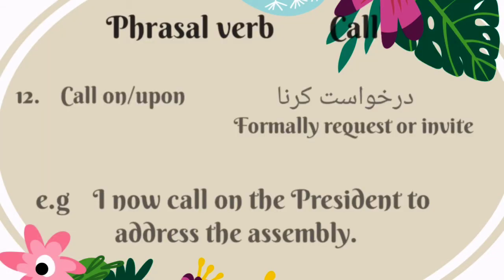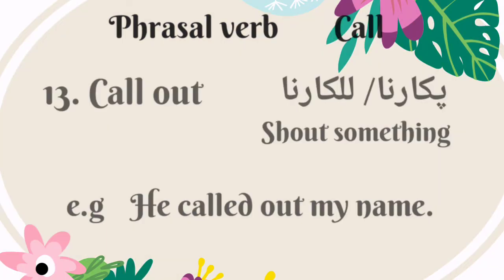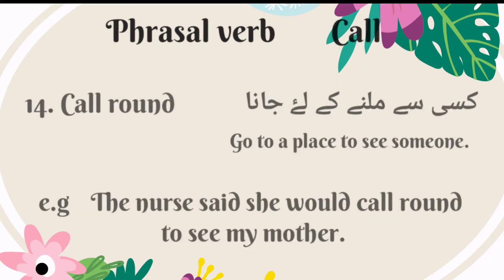The twelfth phrasal verb is 'call on' or 'call upon.' It means formally request or invite — Urdu mein is ka matlab hai tarkhast karna. For example: I now call on the president to address the assembly. The thirteenth phrasal verb is 'call out.' It means shout something — Urdu mein is ka matlab hai pakarna ya lalkarna. For example: he called out my name. The fourteenth phrasal verb is 'call round.' It means go to a place to see someone — Urdu mein is ka matlab hai kisi se milne ke liye jana. For example: the nurse said she would call round to see my mother.